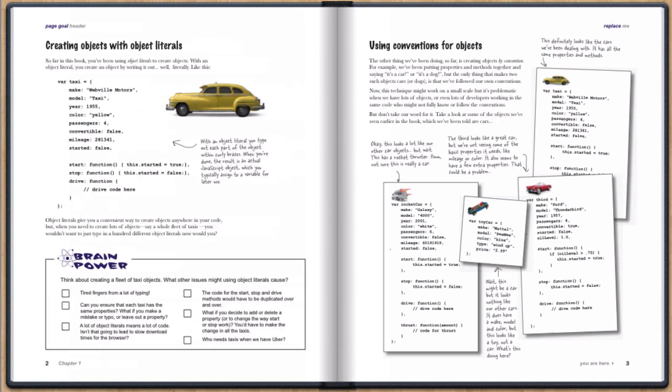Like, what if one car object has different properties from another car object? Or you might also be sick of retyping the methods in your objects over and over in each object literal that you create.